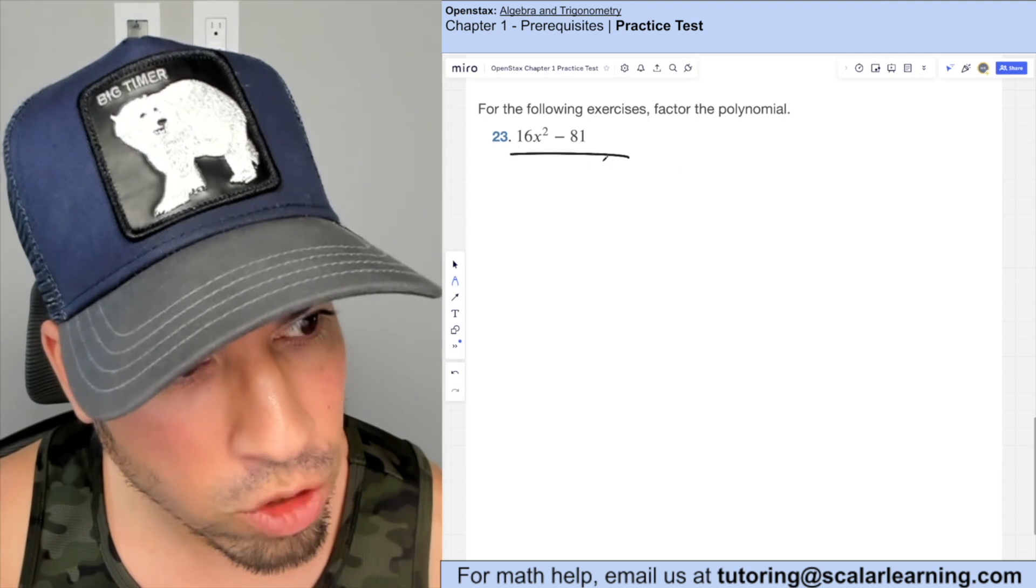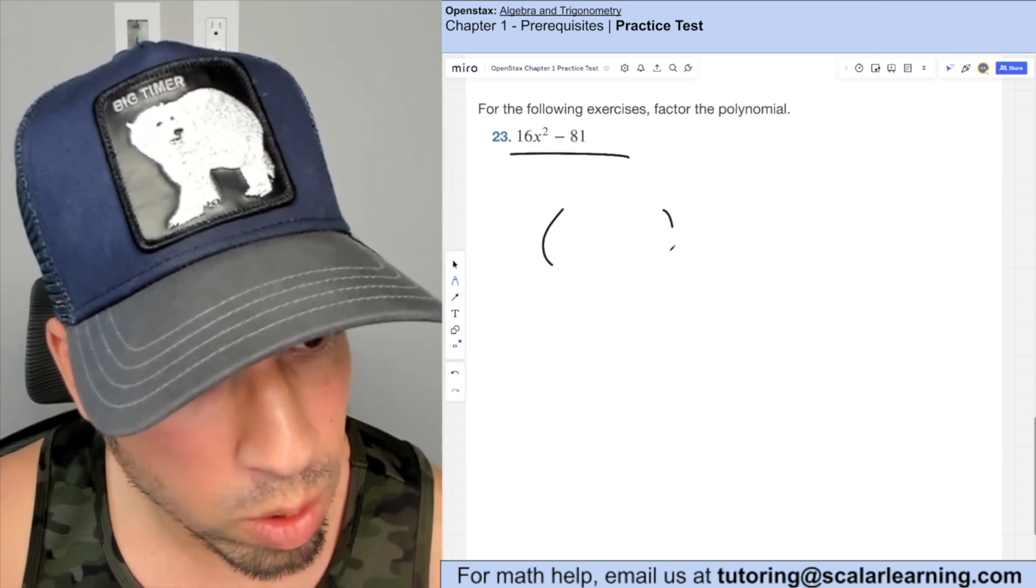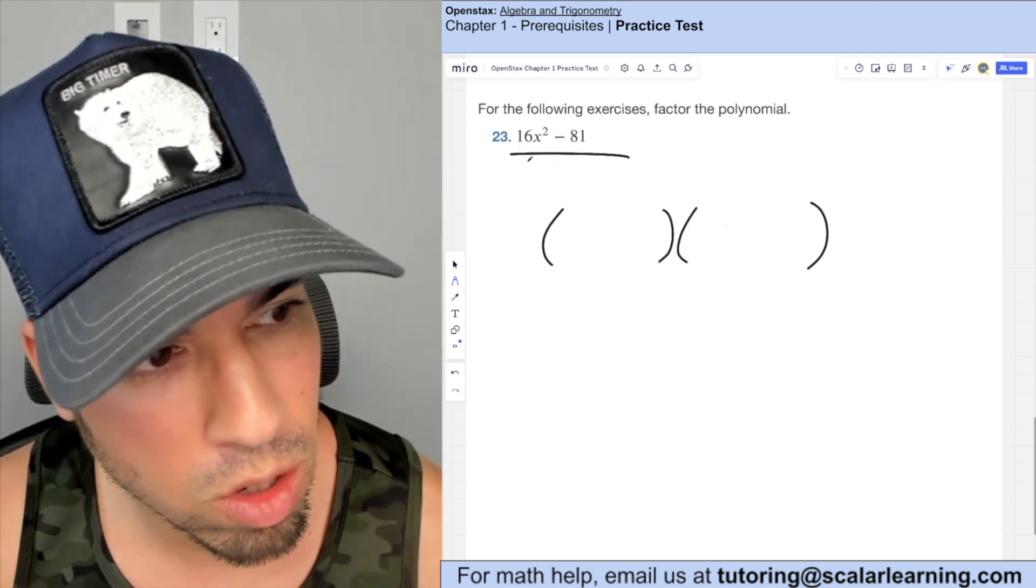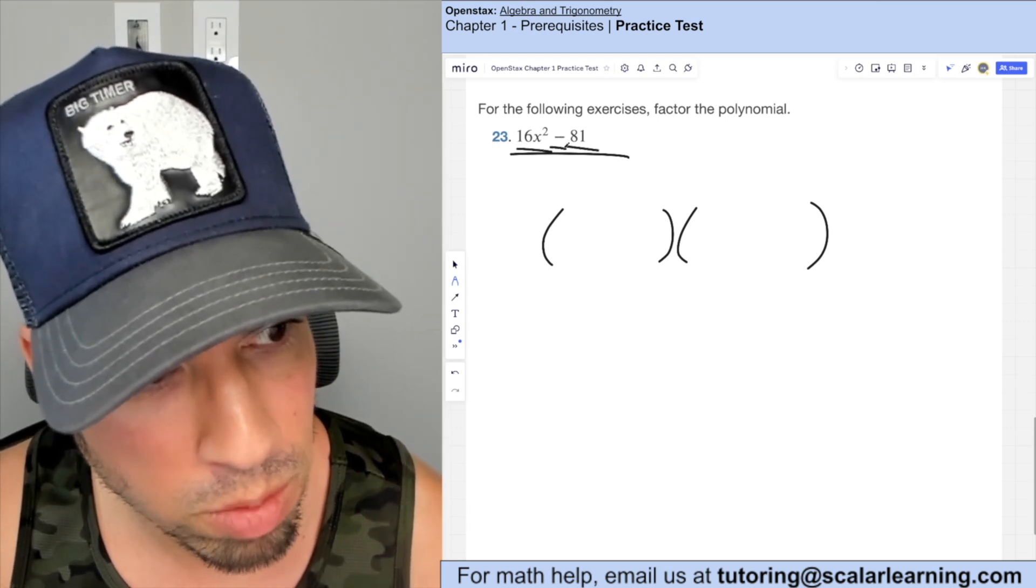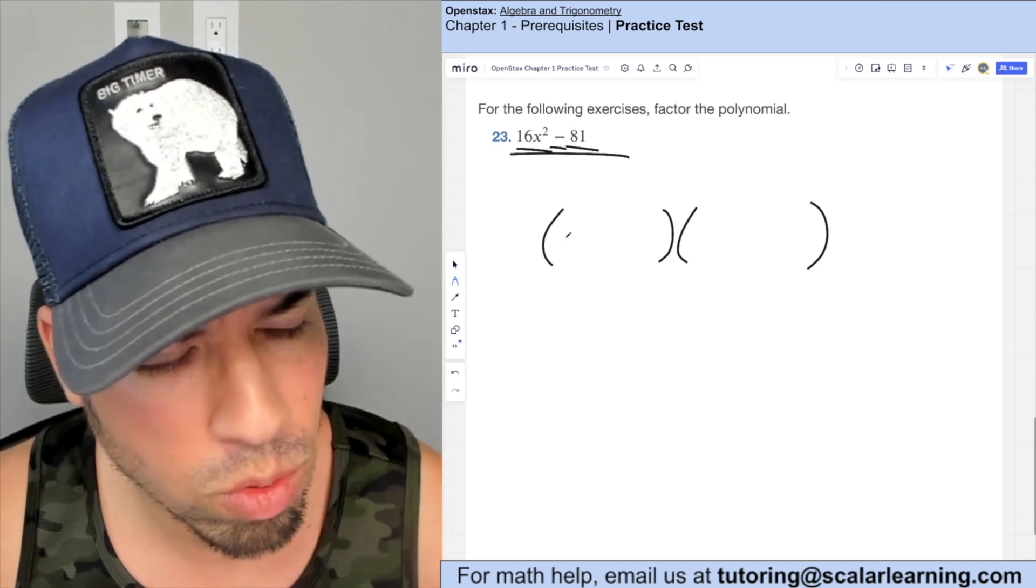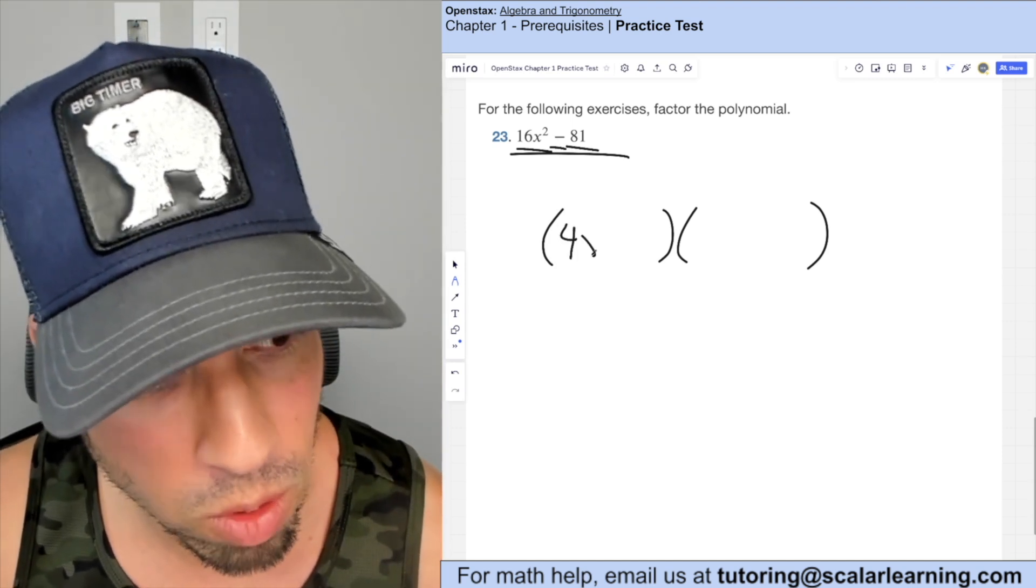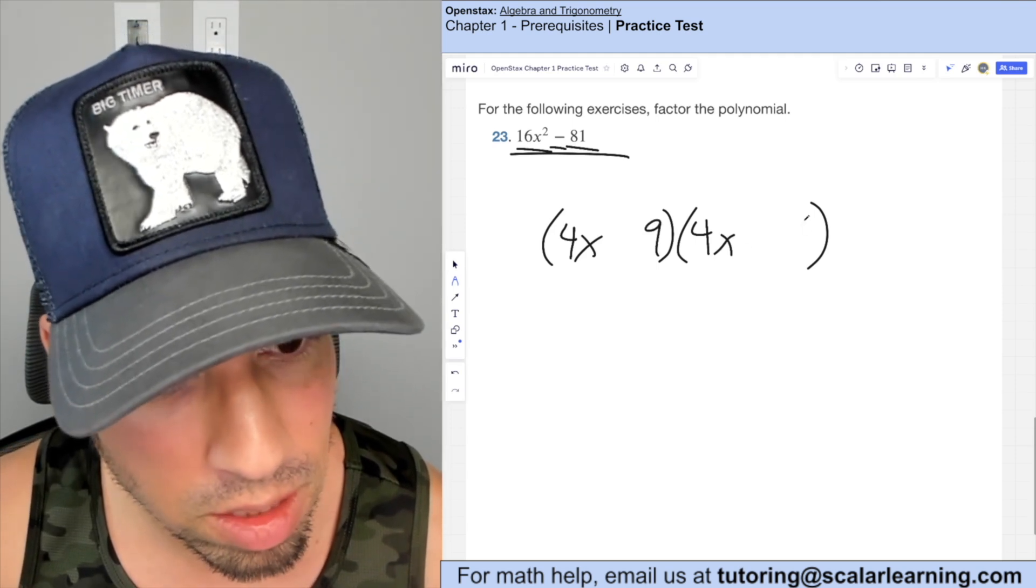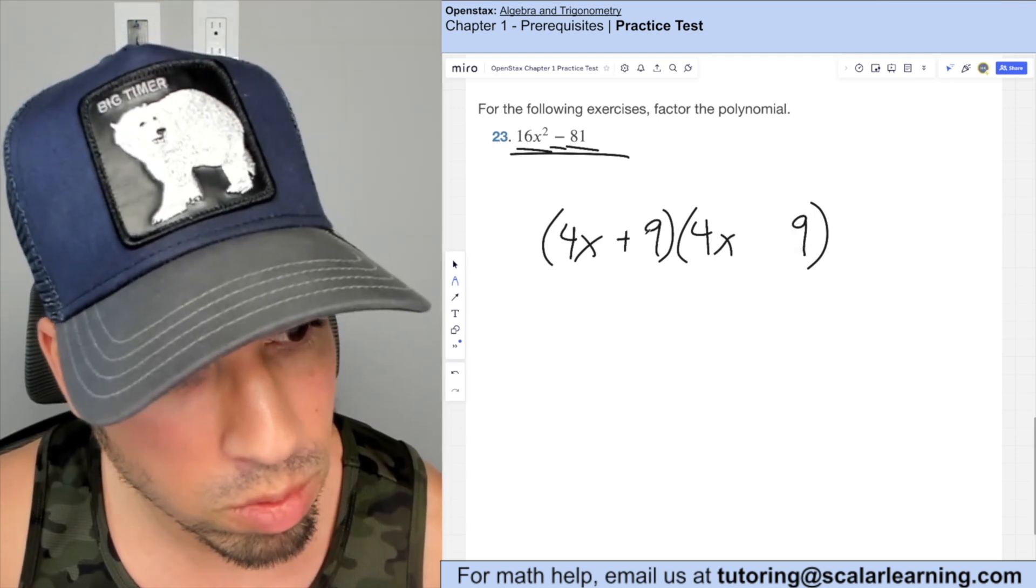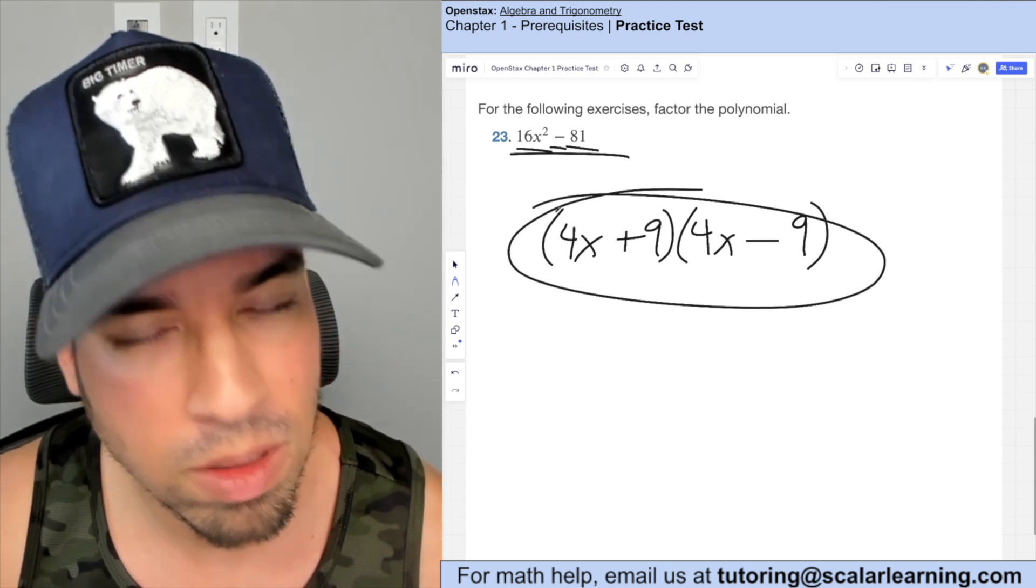Here what we're doing is we're factoring and guess what that's a difference of squares. So when we have a difference of squares, we note that this is possible because this is a perfect square and that's a perfect square and we're subtracting them. So what I do is I take the square root of 16 x squared, which is four x, and I place that here and here square root of 81, which is nine, I place that here and here. And then I alternate with the plus minus boom, done.